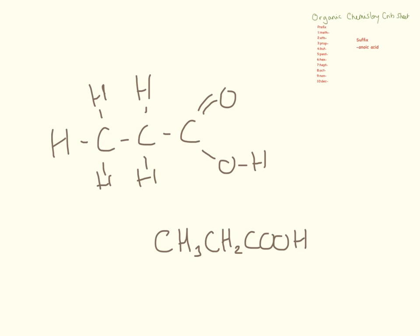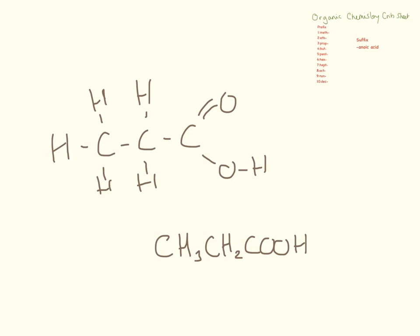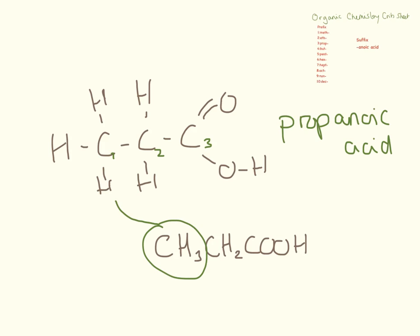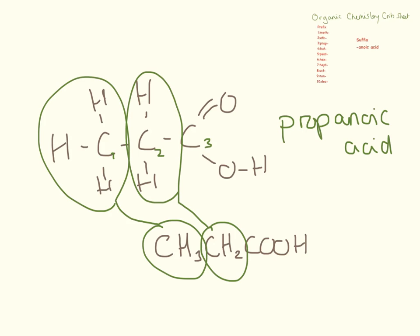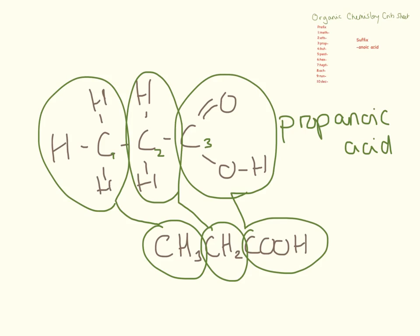This is the third carboxylic acid that we need to know. It has one, two, three carbons in it, so this is propanoic acid. The formula tells us how to draw things: we have a CH₃ group here, a CH₂ group which corresponds to the CH₂ group, and a COOH group — which I call the 'Q group' — corresponding to this part here.